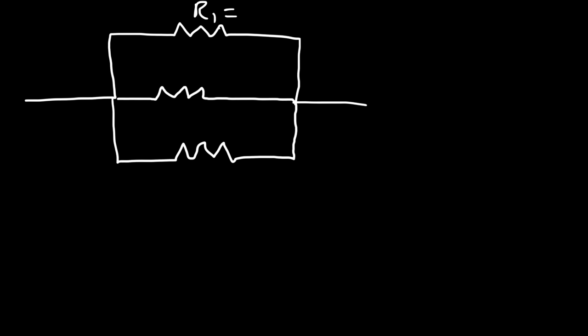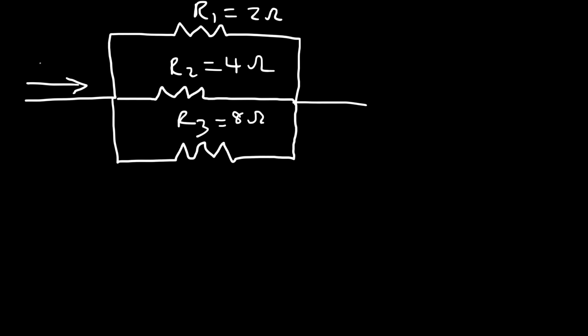Now, what if we have a circuit with three resistors in parallel? Let R1 equal 2 ohms, R2 equal 4 ohms, and R3 equal 8 ohms. The total current entering this circuit is 14 amps. Calculate the current that flows through each resistor.